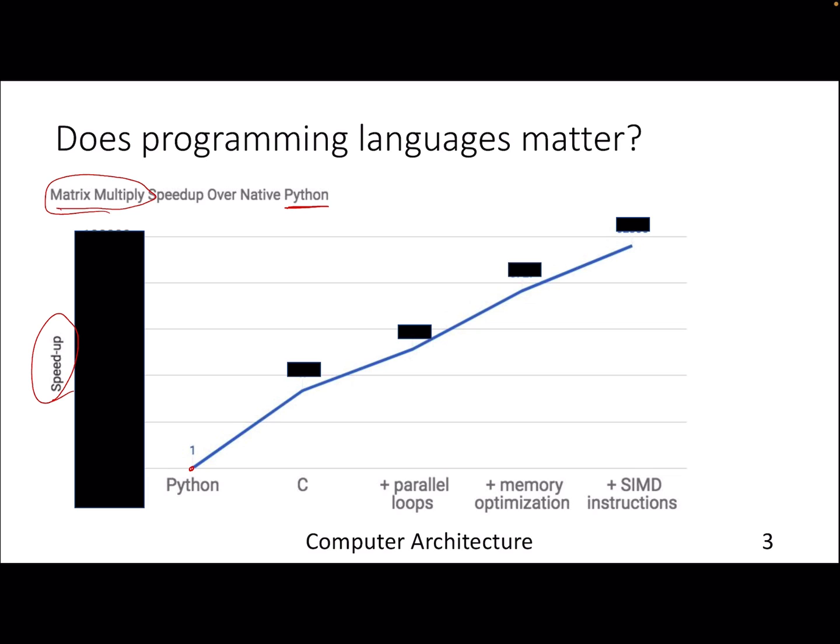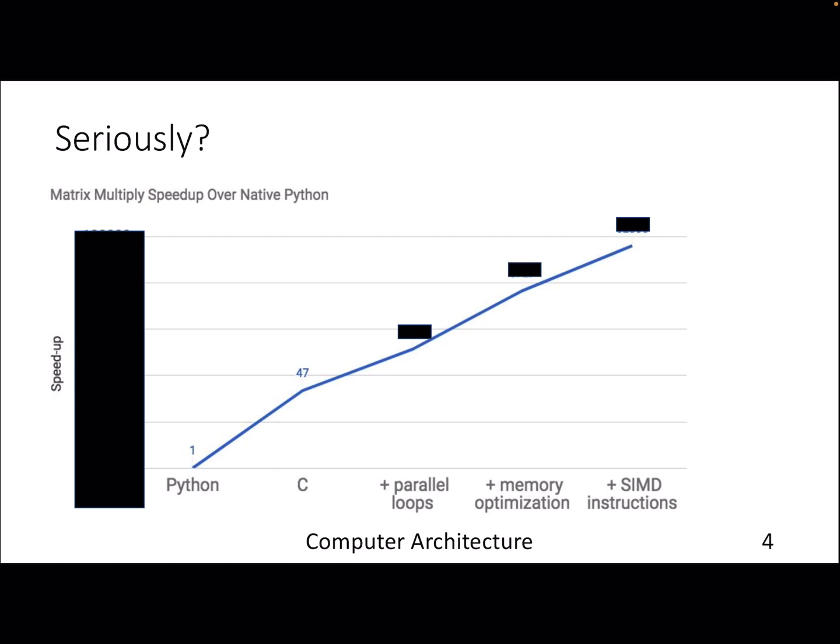The y-axis is normalized speedup, which means Python execution time will be normalized to 1, and we'll compare various things to see up to what extent we can improve the execution time on top of the baseline Python code. If you just change your Python code to a C code, you'll get 47x. This is 47 times, not 47 percent.